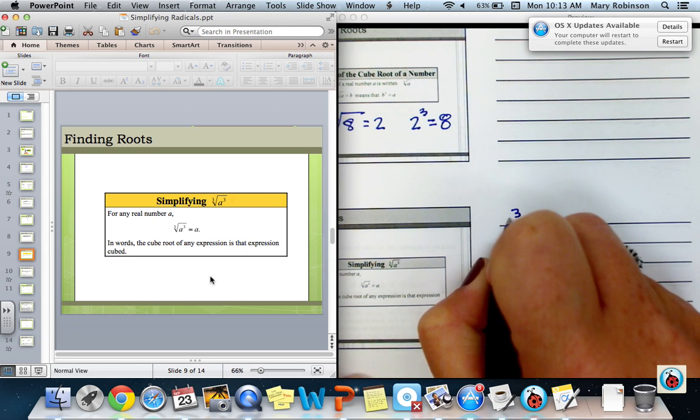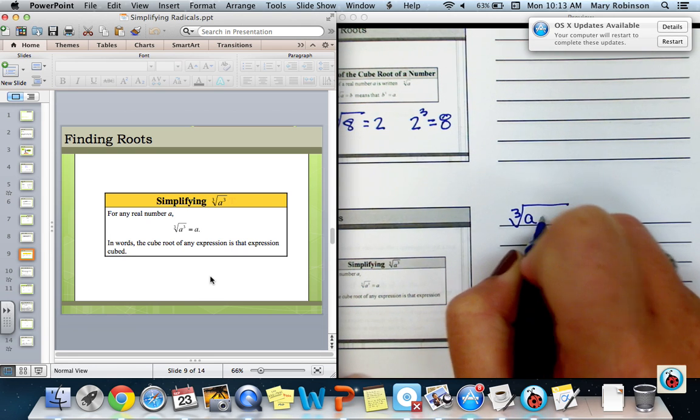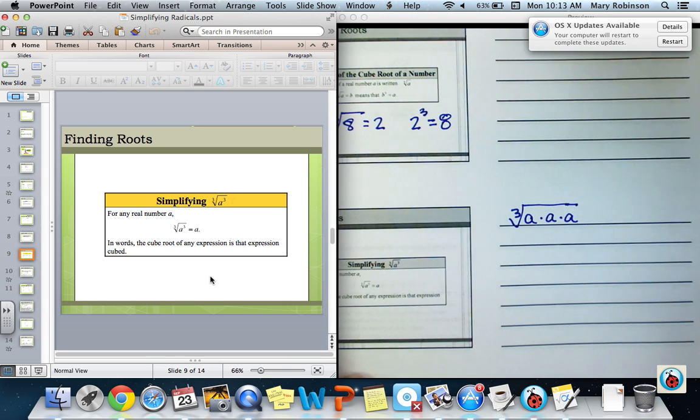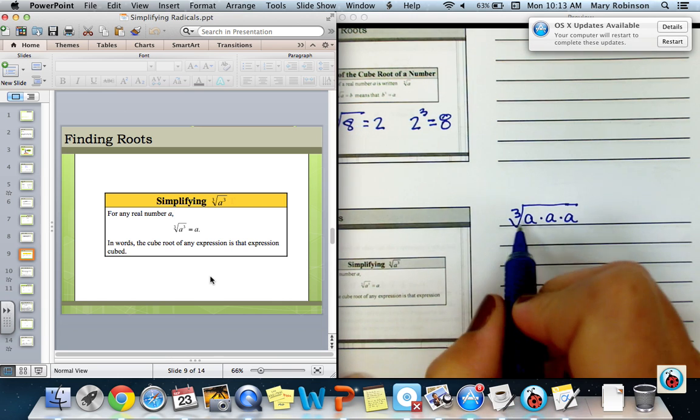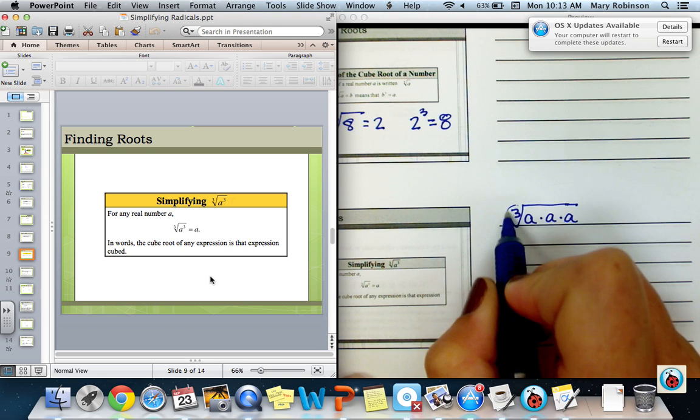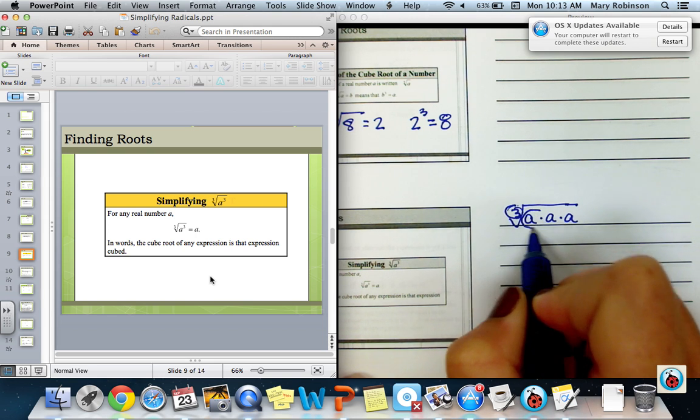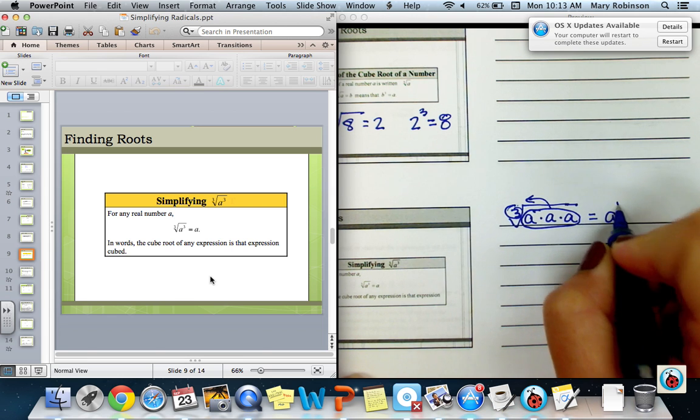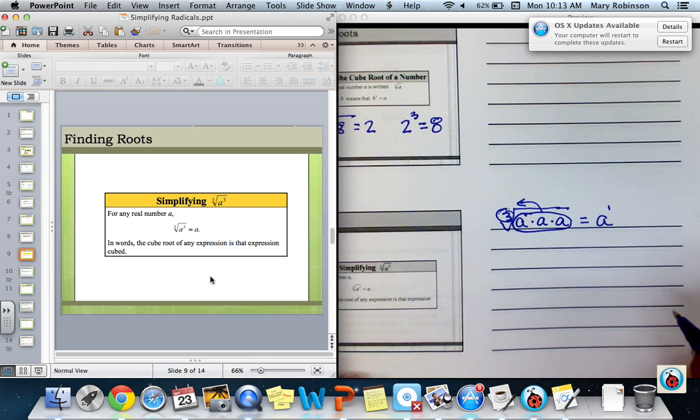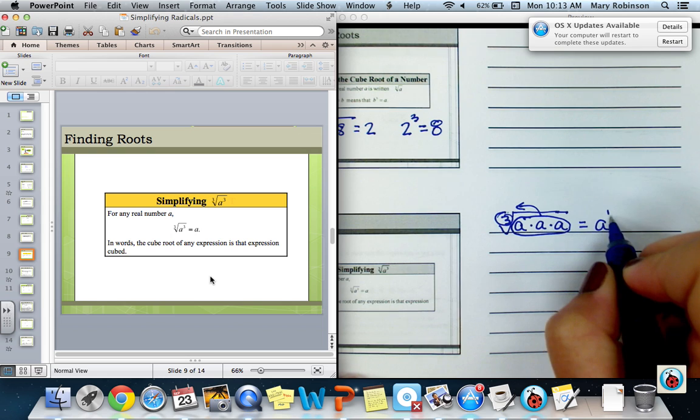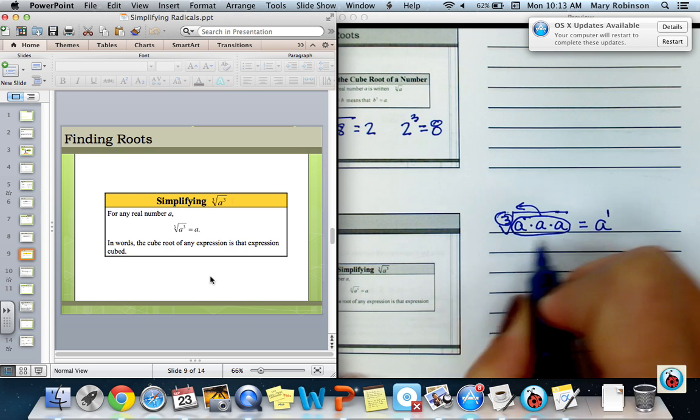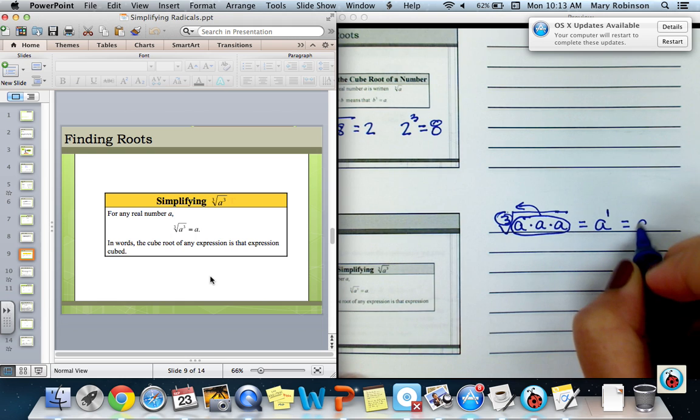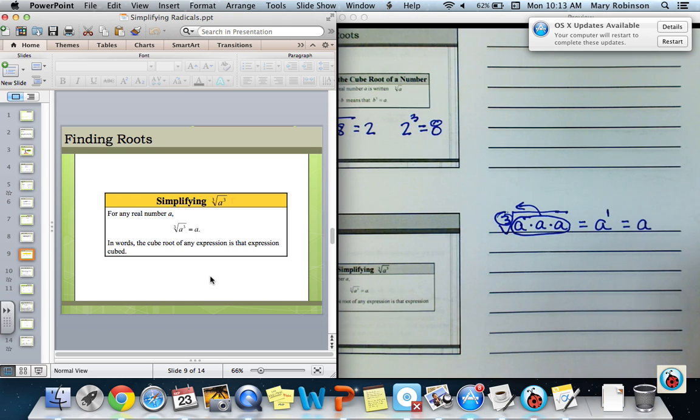When we want to simplify these, we need to remember that for any real number A, the cube root of A cubed is equal to A. In other words, the A cubed can be written as A times A times A. And similarly to the square roots, if we have cube roots, we're looking for groups of size 3. So I have three A's. So that means I have one group of A's, A to the first power. Again, this exponent representing how many groups I have. But of course, we don't put that. That's like an understood one. So that would just be A.